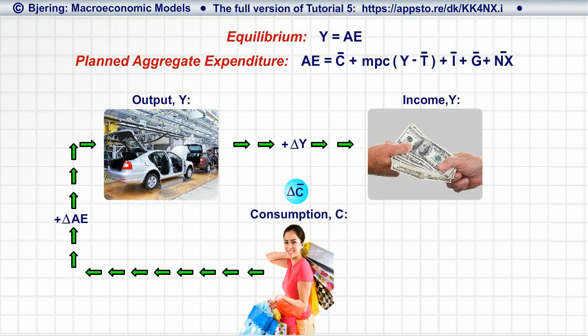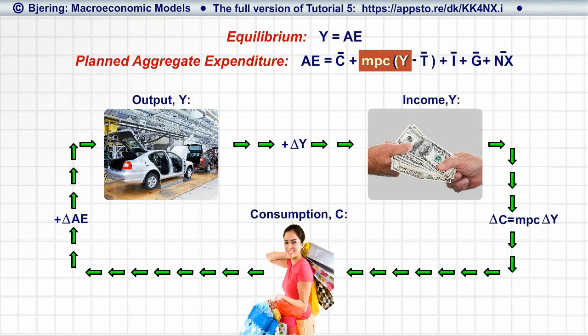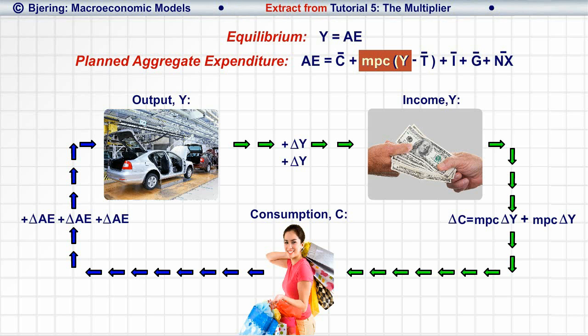This starts a new process. It appears from the endogenous consumption term of the AE equation that the increase in income increases endogenous consumer demand, generating another increase in aggregate expenditure and in output, generating another round of increases in income, consumption, and aggregate expenditure. In income, consumption, and so on, and so on.